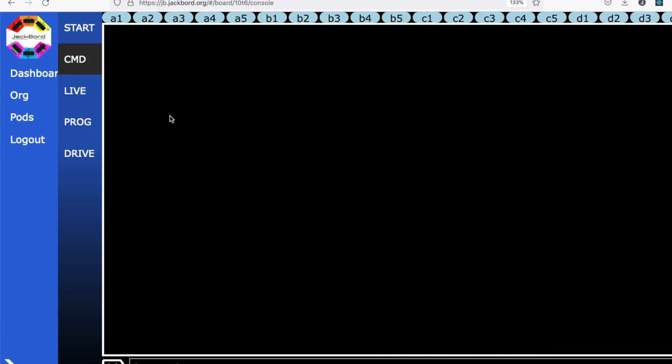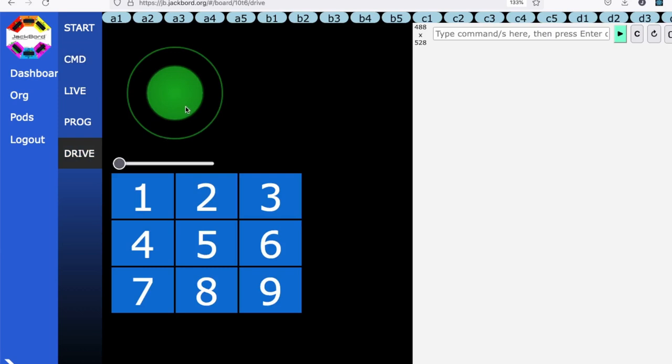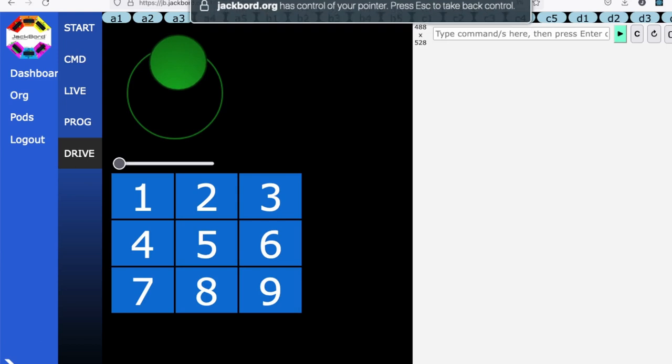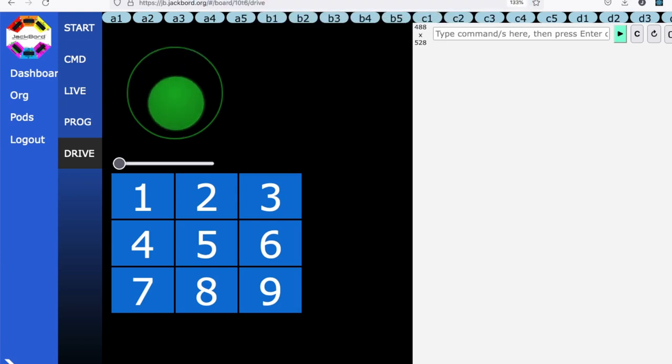Next, turn on the JackBoard and navigate to the dashboard. When there, click on the drive page. Now the drive page has a few features. The first one is this big joystick in the top. So if I drag it forward, the JackBoard will move forward. If I go backwards, it will go backwards.